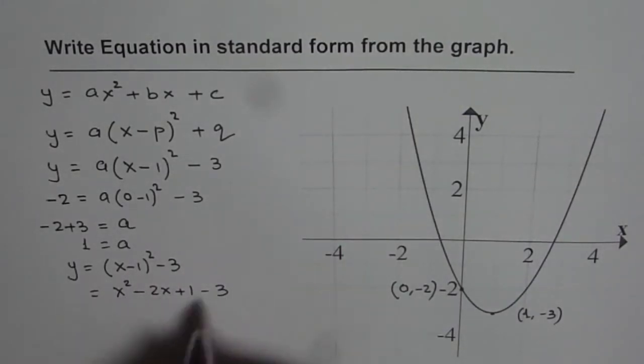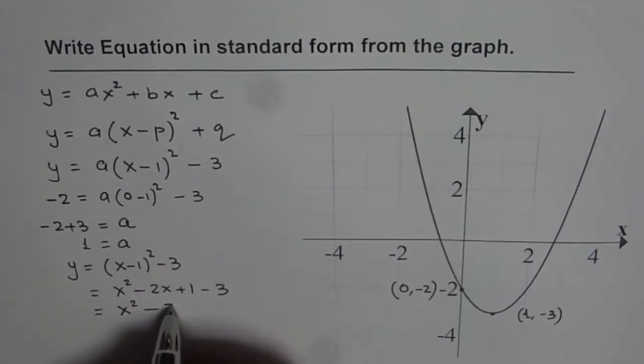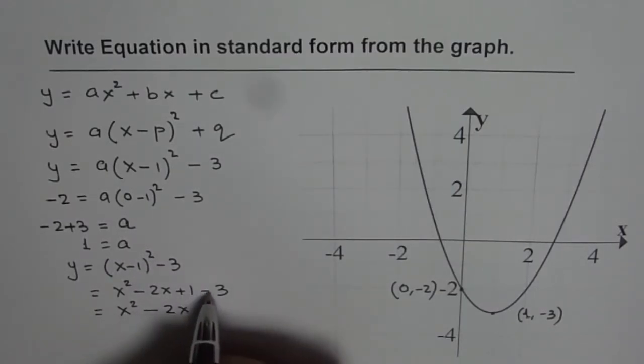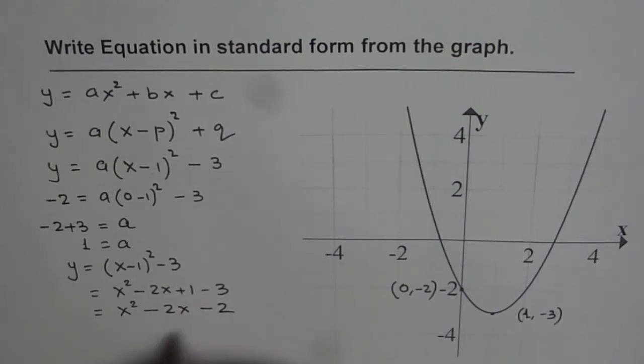Combining the constants, we get our equation, which is x² - 2x and 1 - 3 gives us -2. So that is the required equation in standard form.